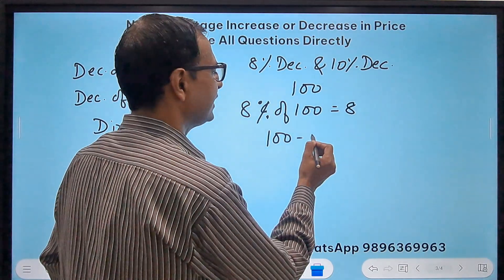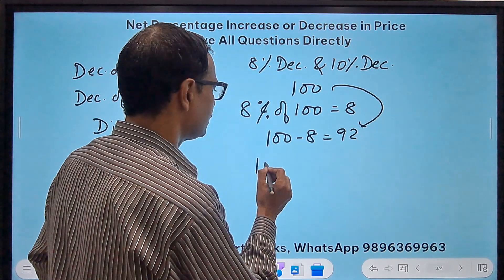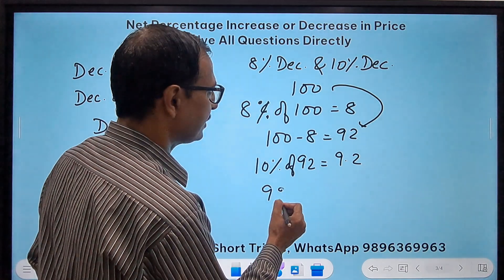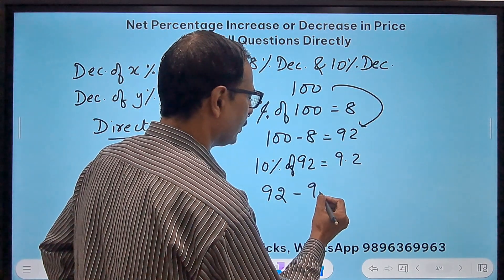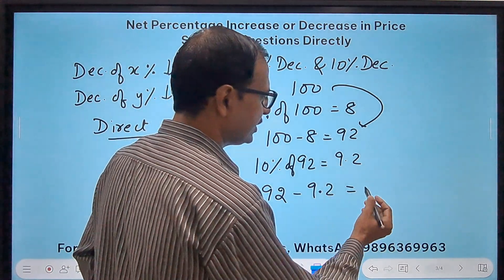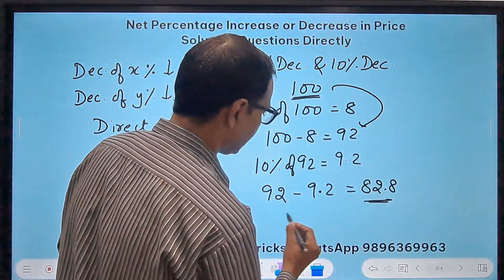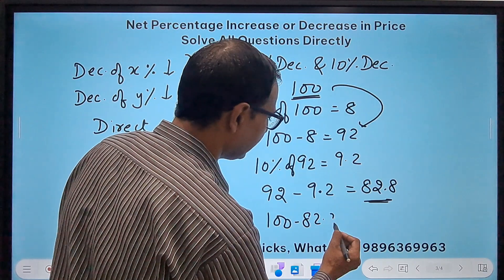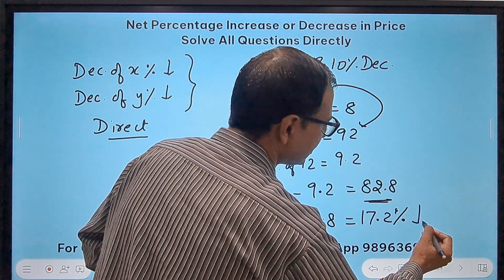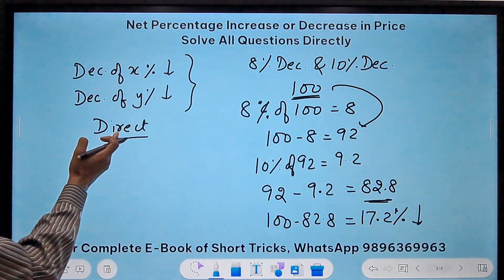And then we have to do 10 percent. So 10 percent of 92 is 9.2, and so 92 becomes 92 minus 9.2, which gives my price after second variation, that is 82.8. So how much is the decrease? The overall decrease is 100 minus 82.8, and that comes out to be 17.2 percent decrease. This is the answer, this is traditional approach.